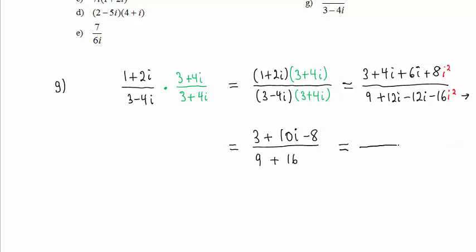In the numerator, we have 3 minus 8 is negative 5 plus 10i. In the denominator, we have 25. We have negative 5 25ths plus 10 25ths i. Reducing, we have negative 1 5th plus 2 5ths i, and that is our answer.